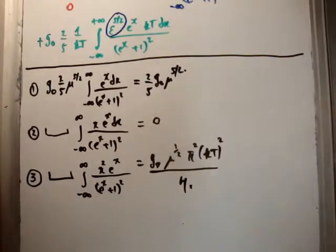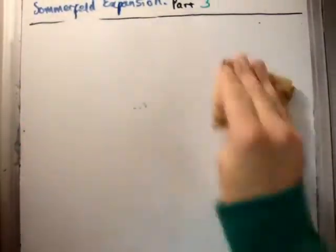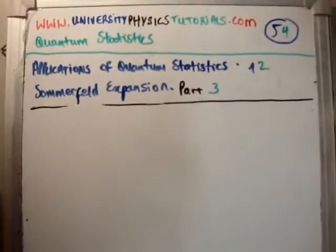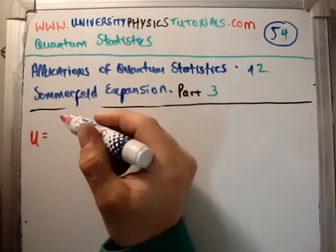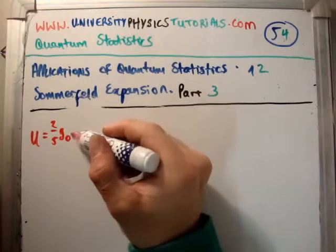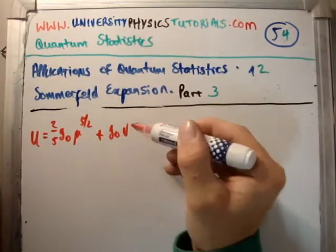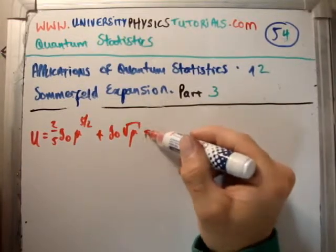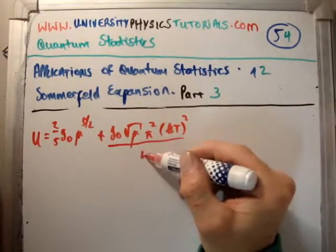So now we have our three terms after dropping down to 2 for the same reason as did in the last video. Let's plug them all together, do a small bit of algebra, and get the answer. So plugging all those terms together in order to get the total energy, we're going to get the following. That u is equal to 2 fifths g0. We're going to get mu to the 5 over 2. We're going to get plus g0 square root mu, pi squared, kt to be squared, divided by 4.